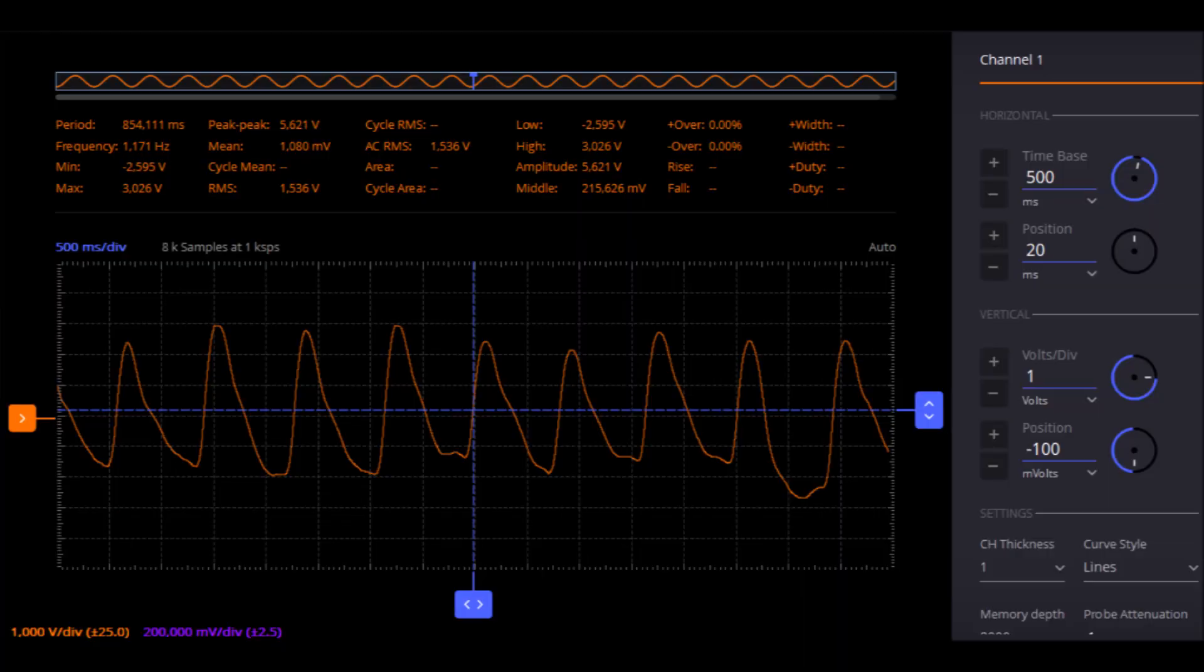After much fiddling, squeezing my finger in between the infrared LED and phototransistor, I managed to get this beautiful signal with a frequency of 1.171 hertz. Multiplying that by 60 gives you the bits per minute, which is around 70. I think it's a little bit high because I was getting frustrated, but here we have a nice signal.